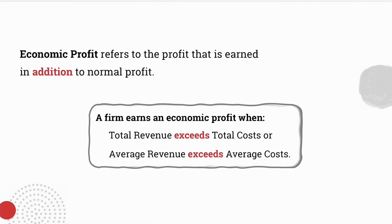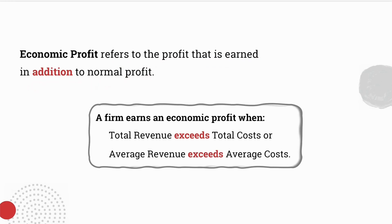Let's kick off today's lesson with an explanation of economic profit. Economic profit refers to the profit that is earned in addition to normal profit. Remember, in our previous lesson we examined normal profit — normal profit is the ideal in the perfect market, and it occurs where total costs equal total revenue, or when average costs are exactly the same as average revenue. When economic profit occurs, our total revenue will exceed our total costs, and our average revenue will exceed our average costs.